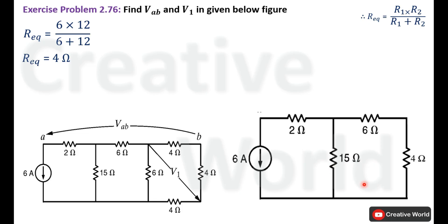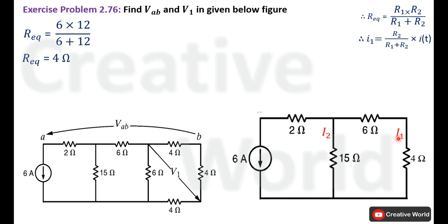We can replace these two resistances with a single 4 Ohm resistance. The circuit is now simplified: there are two parallel connected resistive branches across a constant current source. We can apply the current divider rule to calculate the current through each branch. We label the branch currents I1 and I2. The equation for I1 using the current divider rule is: I1 equals R2 divided by (R1 plus R2) multiplied by I_total.